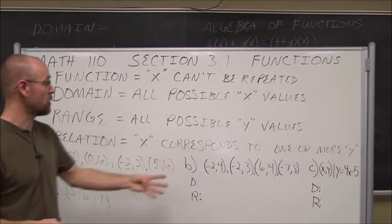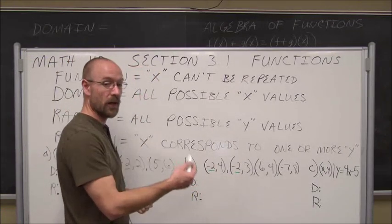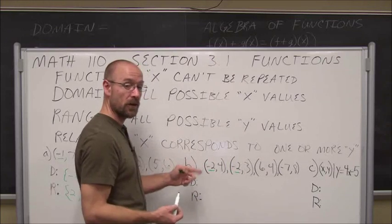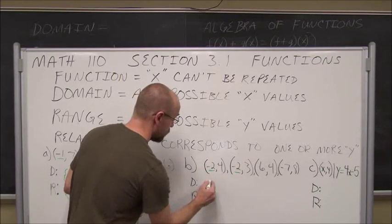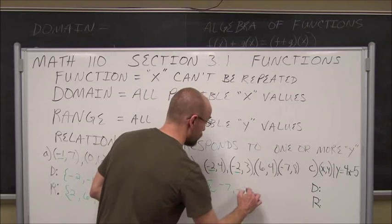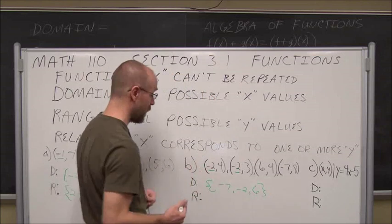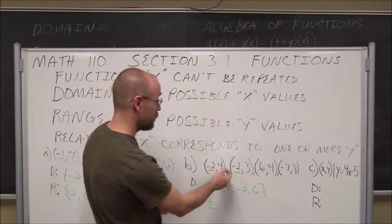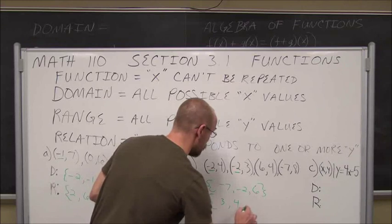Let's look at the next example and determine if this relation is a function. If I notice here, negative 2 and negative 2 — the x value is repeating, which means when x is negative 2, it corresponds to 4 and 3. That tells me right there that this relation is not a function. We can still find its domain: negative 7, negative 2, and positive 6. For the range — my possible y values — we have 4, 3, 4, and 8, which in order from least to greatest is 3, 4, and 8.